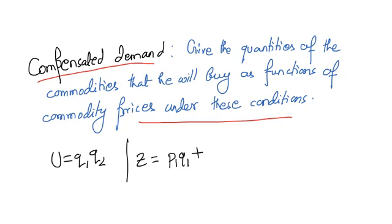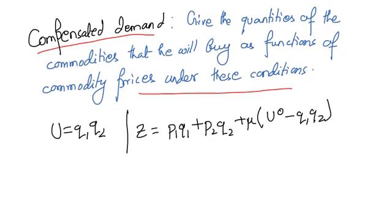Now let us find the partial derivatives and set it to zero. That is dz/dq1, which equals p1 minus μ·q1, which equals zero.